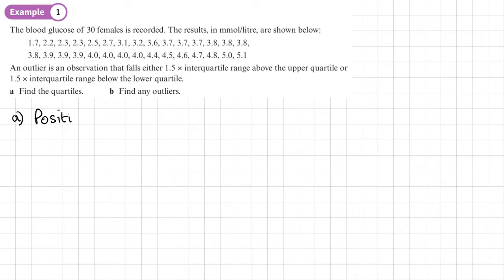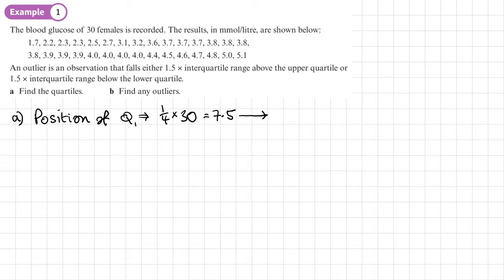We start by finding the position of the lower quartile Q1. We turn that quartile into a fraction — one quarter — times the number of data values, which is 30. A quarter of 30 is 7.5. When you have a value which isn't a whole number, you round it up, so the 8th value is the lower quartile. Counting through: 1, 2, 3, 4, 5, 6, 7, 8 — Q1 is 3.2.